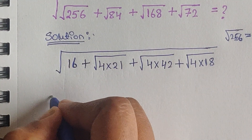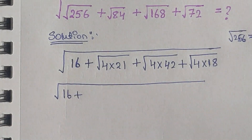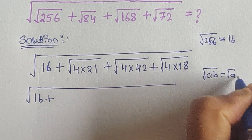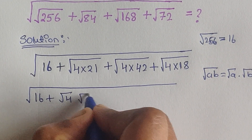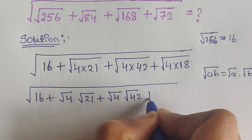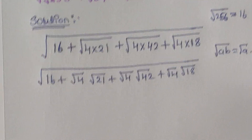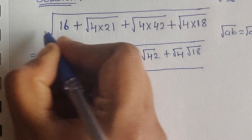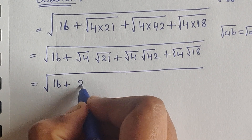Now we have square root of 16 plus those terms. We can use the formula square root of a times b equals square root of a times square root of b. Using this formula we can write: square root of 4 times square root of 21, plus square root of 4 times square root of 42, plus square root of 4 times square root of 18.